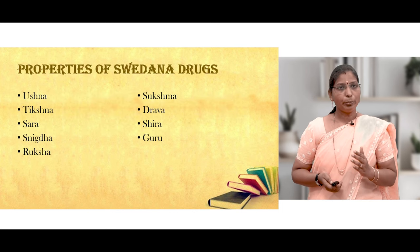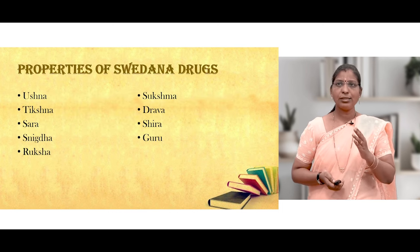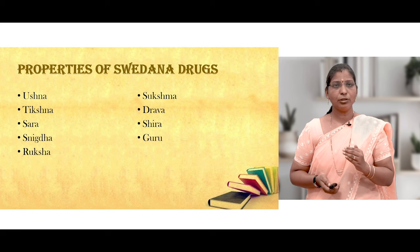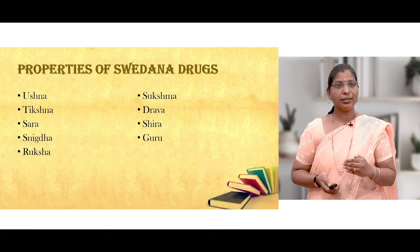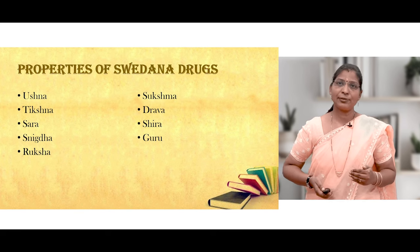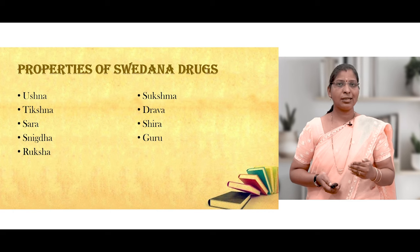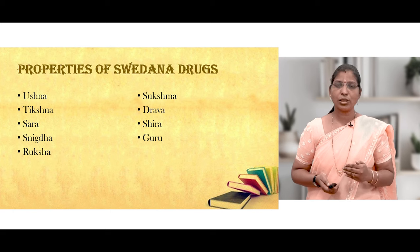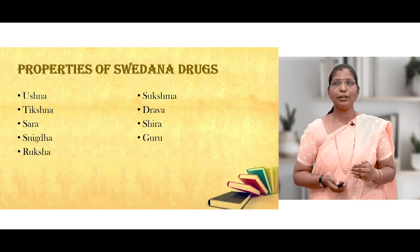The properties of Swedana dravyas are the routine properties which a Swedana dravya possesses: Ushna, Tikshna, Sara, Snigdha, Ruksha, Sukshma, Drava, Sthira, and Guru.